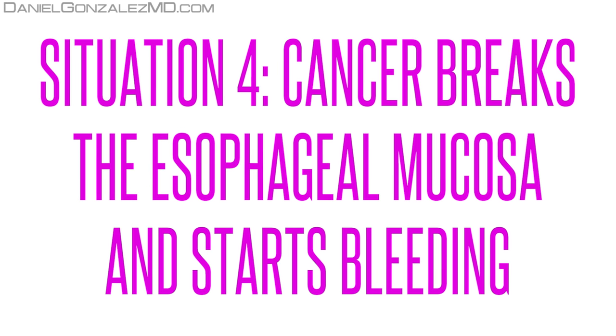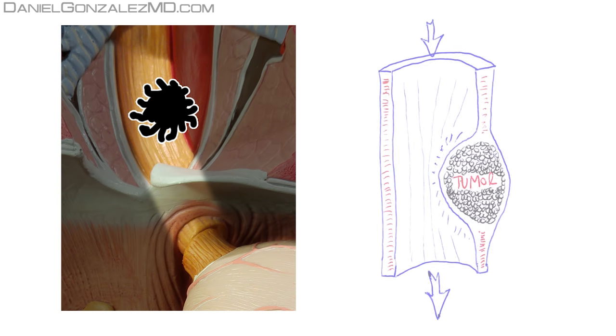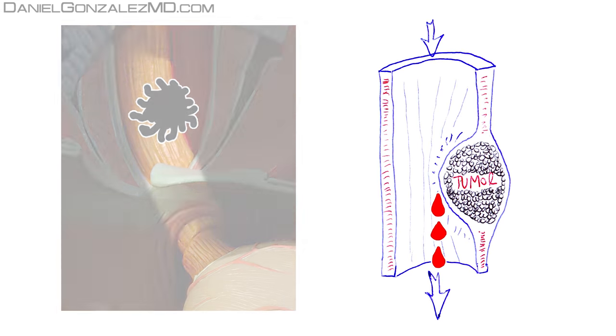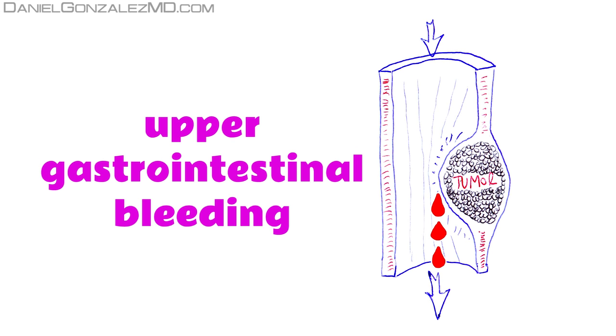Situation 4: Cancer breaks the esophageal mucosa and starts bleeding. Because cancer can break the esophageal mucosa and thus a blood vessel, the person with esophageal cancer can start bleeding without noticing it. This is called upper gastrointestinal bleeding.